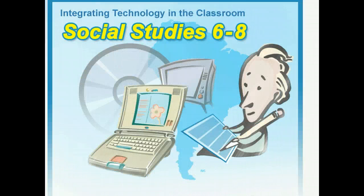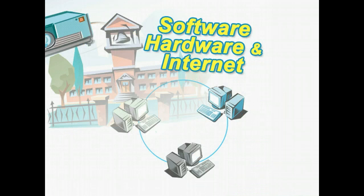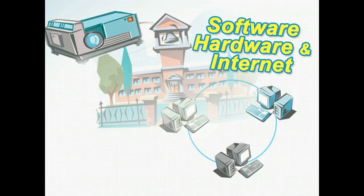Middle and junior high school students are often avid computer users who jump at the chance to get their hands on a keyboard, even if it's only at school. This eagerness can be a great tool for you to reach students in innovative and exciting ways. Some of the main types of technology you'll come into contact with at school are software, hardware, and the internet. We're going to look at examples of each of these types of technology.